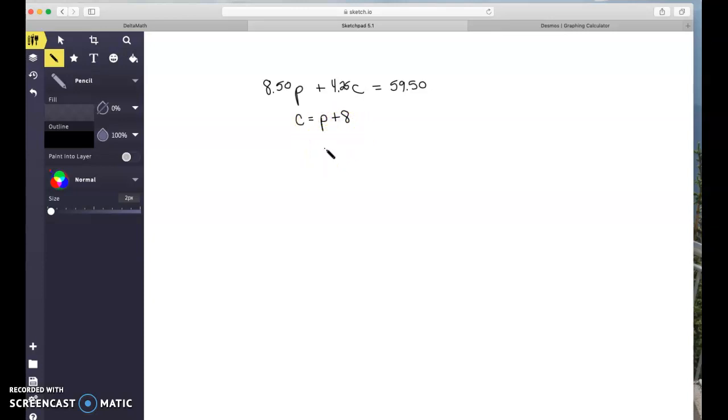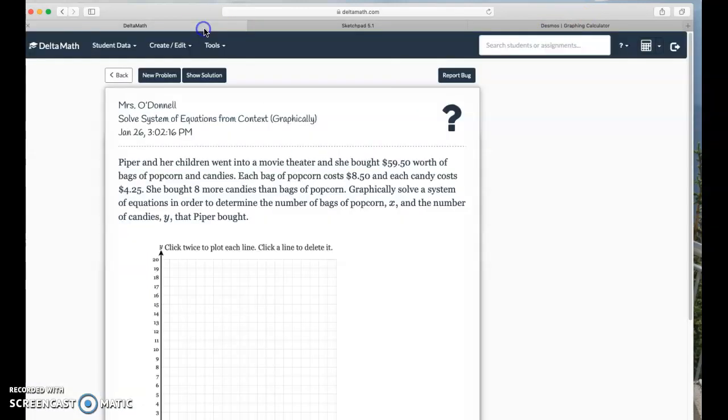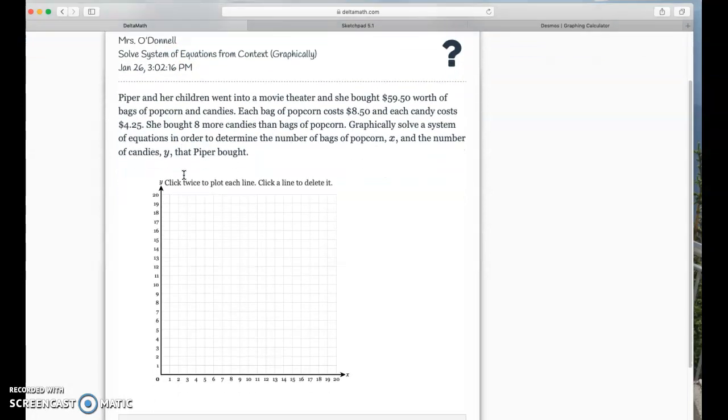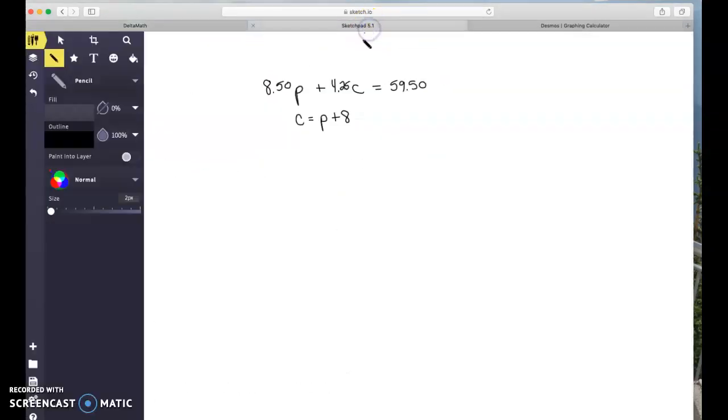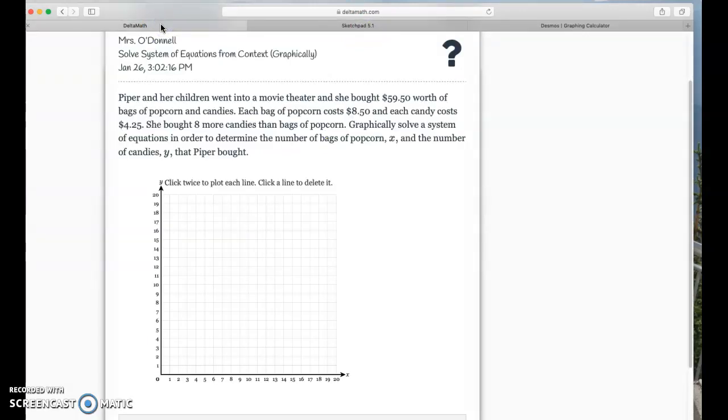The cool thing here is that now we have our system of equations and you could at this point just type it right into Desmos, graph it, see what it looks like, but unfortunately in delta math you don't have that option. The C equals P plus 8. We want to figure out what axis is what and then probably put both of our equations in Y equals MX plus B form.